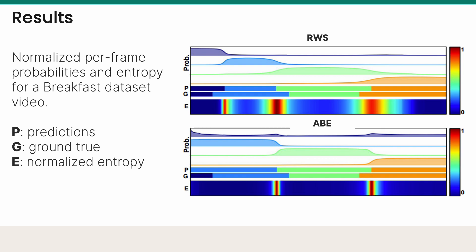We compute the entropy of the per-frame probability as a measure of the model's per-frame confidence. High entropy implies low confidence.